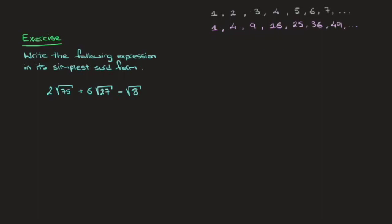The first thing we need to do is to simplify each of these square roots as much as possible. So let's go ahead — this equals 2 times the square root of 75.